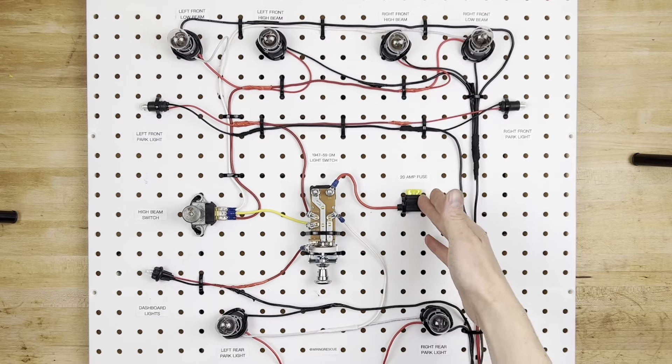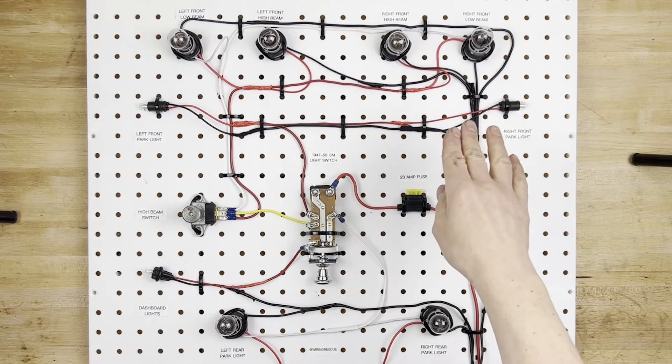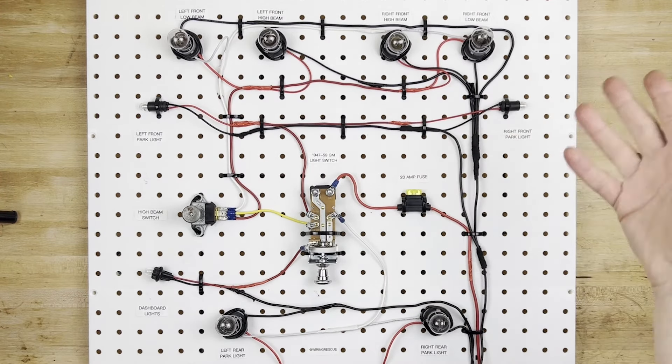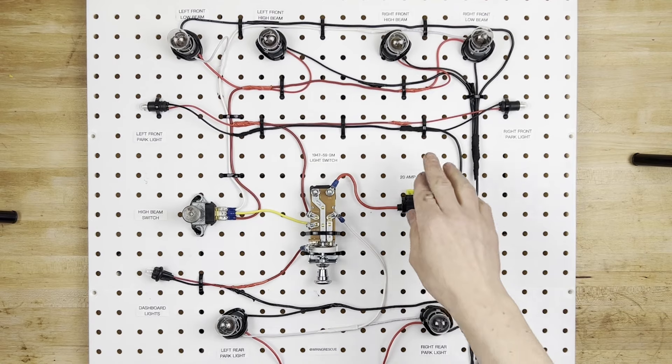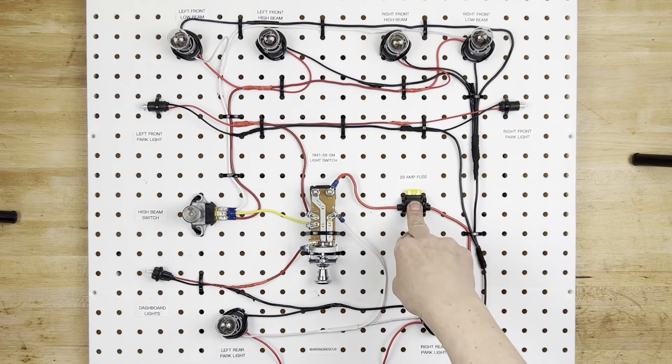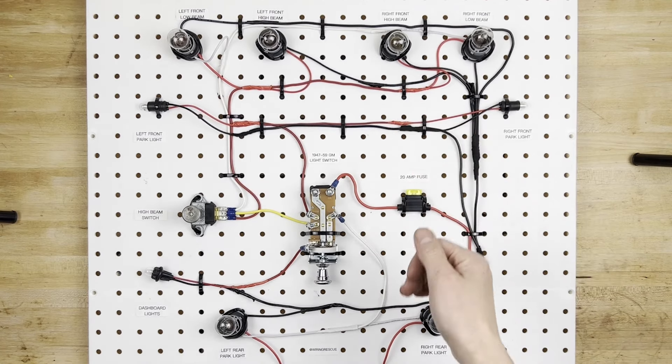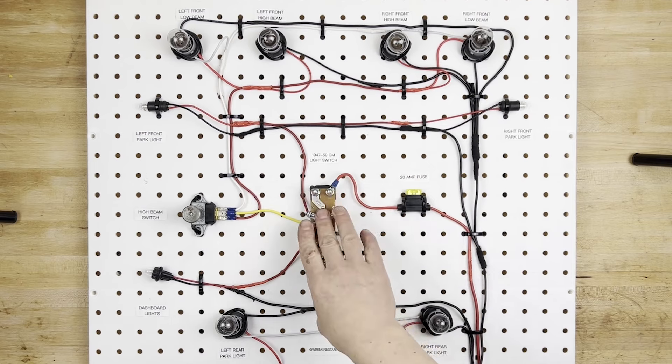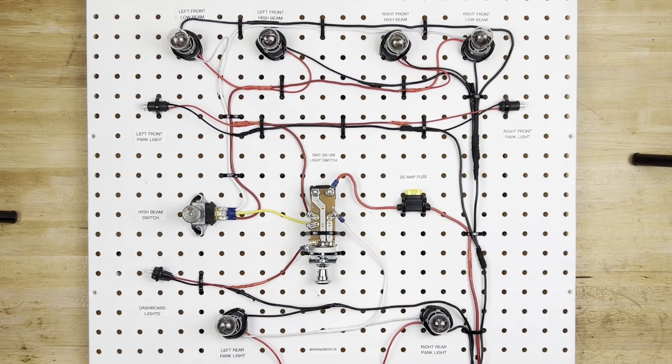So you could actually use a smaller amp than this. If you find out all of your headlights only add up to, I don't know, 13 amps, then you could actually use a 15 amp fuse here, and it would be totally fine, because you're not going to overload your headlight switch or the fuse.